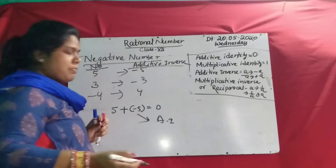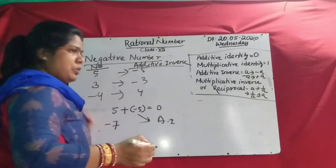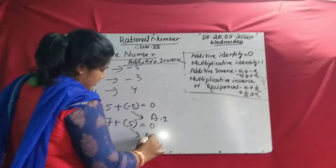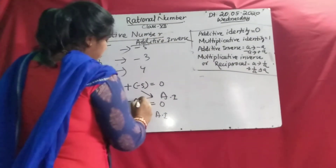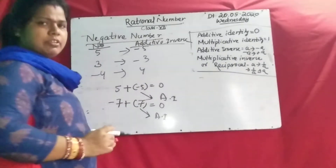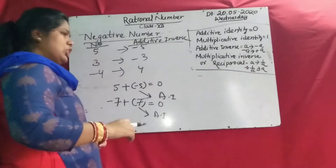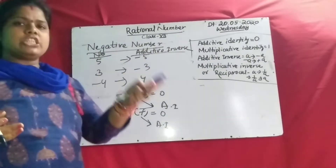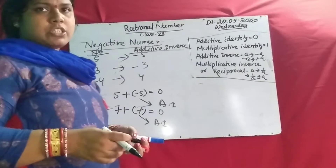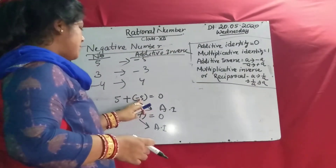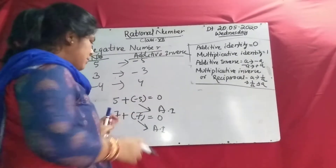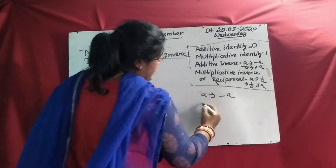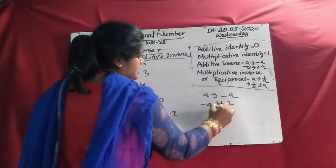Suppose: what is the additive inverse of minus 7? Minus 7 is given and we are to find the additive inverse — you add plus 7 and you get 0. So plus 7 is the additive inverse of minus 7. In summary: the given number's sign changes. Plus will change to minus, minus will change to plus. That is called additive inverse. So plus 5's additive inverse is minus 5; minus 7's additive inverse is 7. When you add these two numbers, you get 0. A's additive inverse is minus A. If minus A is given, the additive inverse is plus A.